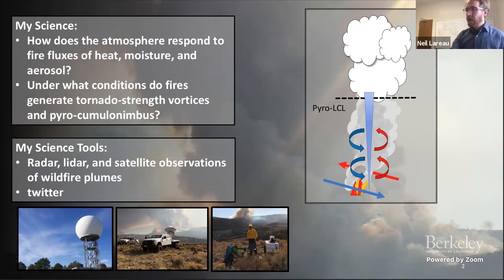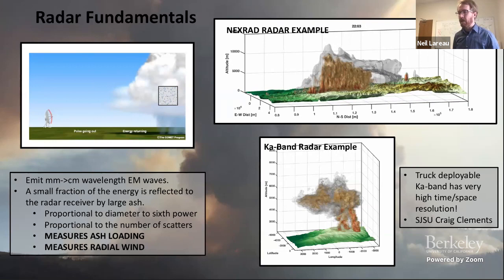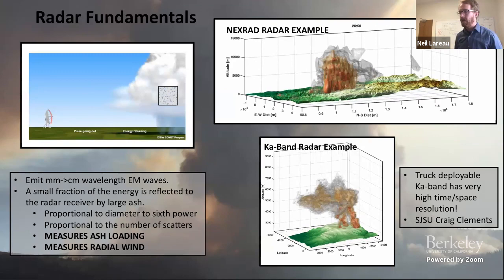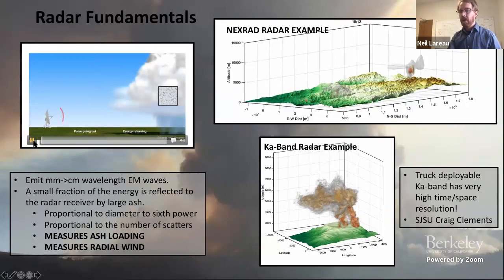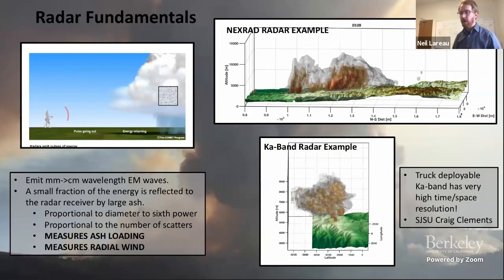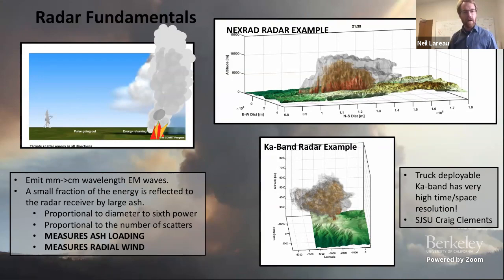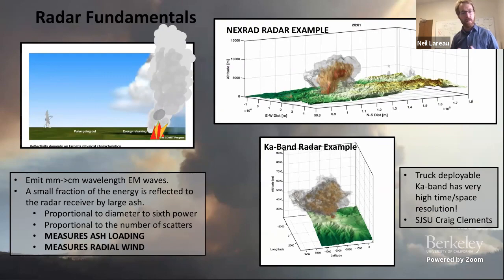I want to make sure we're on the same page about the tools I'm using. At the top is a NEXRAD radar animation of the Creek Fire from September 5th, and on the bottom is a KA-band scanning research radar observing a prescribed fire in Utah. Radars, traditionally used for observing precipitating systems, are also very good tools for observing wildfires. Radars work by emitting a pulse of electromagnetic radiation at millimeter to centimeter wavelengths, and a small fraction bounces back off suspended scatterers. Wildfires emit a ton of particulate ash — millimeter to centimeter scale particles we call pyrometeors — which are also very good radar scatterers.